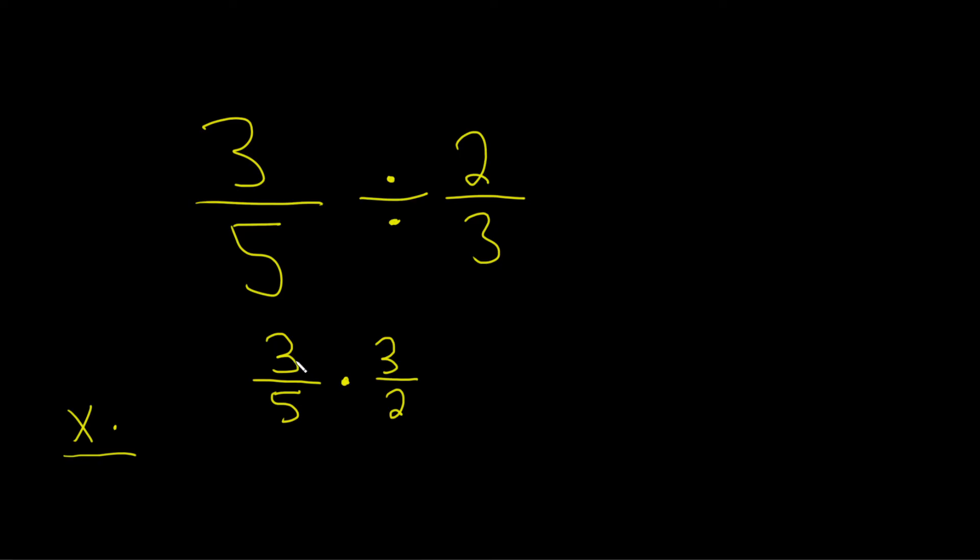Now you can multiply straight across. 3 times 3 is equal to 9, 5 times 2 is equal to 10, and that would be the final answer. I hope this video has been helpful. Good luck.